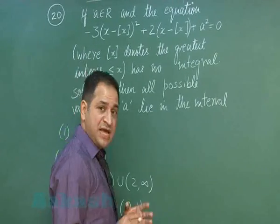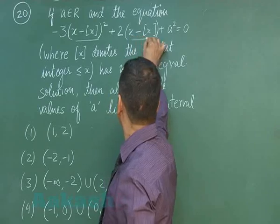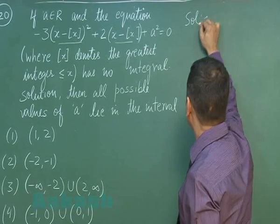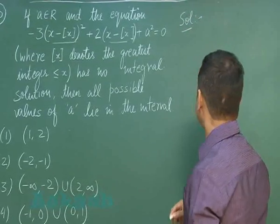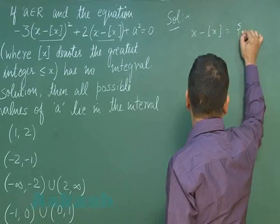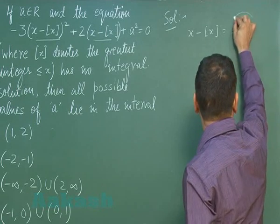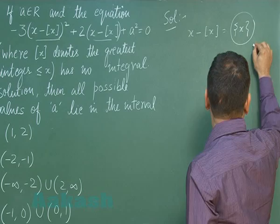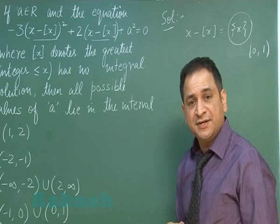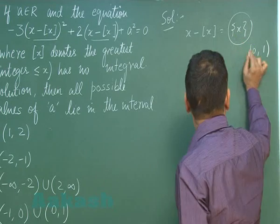This problem is not directly related to a quadratic equation because there are many complex functions, but we will solve it graphically. We know that x minus the greatest integer of x equals the fractional part of x, and the value of the fractional part of x lies between 0 and 1. If we do not put any integer value of x, we would not be getting 0 for the fractional part.